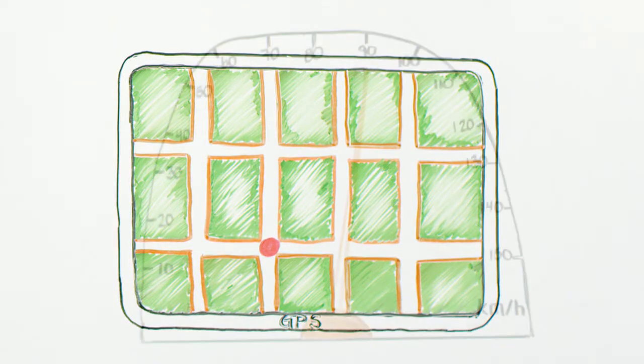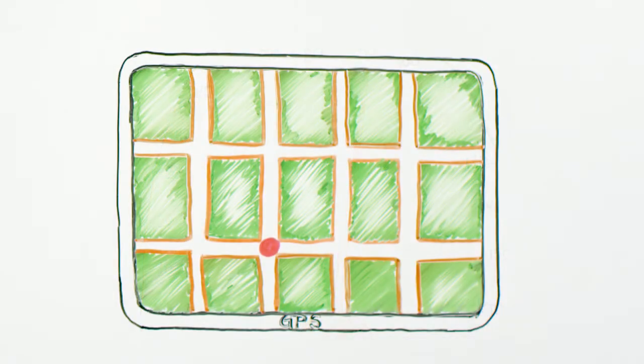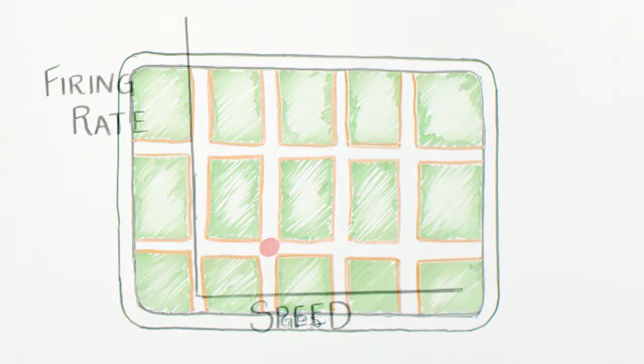We can think about what the speedometer is actually doing by considering the angle of the needle. This angle increases monotonically with speed, giving you a very clean readout of how fast the car is going. At the same time, the GPS gives you a very clean readout of your XY position.